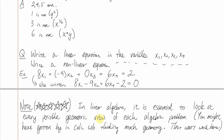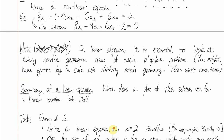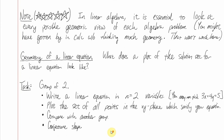In linear algebra it's essential to look at every possible geometric view of each algebra problem. In calculus you can get by without thinking much about geometry, but that won't work here. The question is: what does the plot of the solution set of a linear equation look like? Write a linear equation in two variables — don't pick 3x + 4y = 5 since I'm using that — pick any coefficients, plot all solutions in the xy-plane, compare with a neighbor, and conjecture the shape. This is a good place to pause the video.